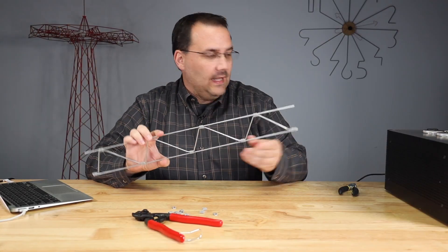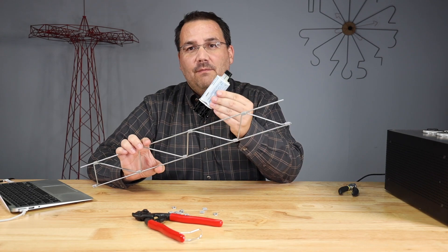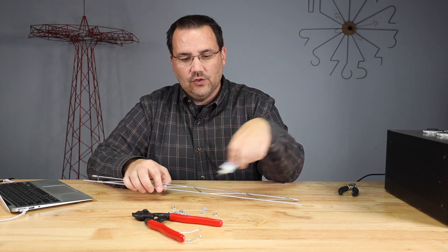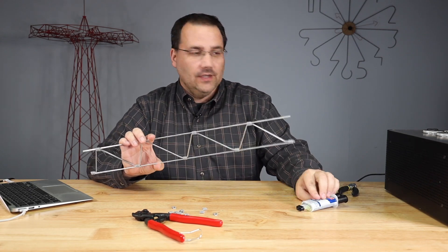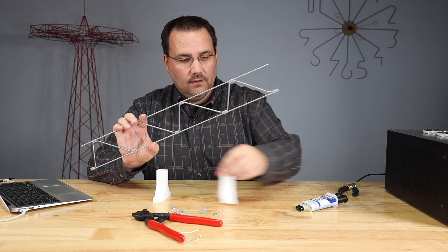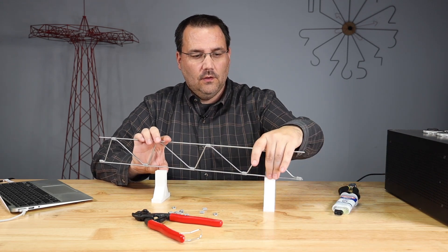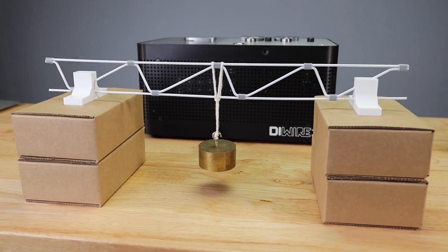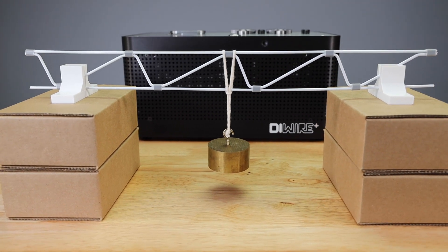And once you have all the clips in place, you can go ahead and add some five-minute epoxy to each one of the joints. This will make it surprisingly rigid. I also 3D printed some truss holders, and this allows me to do some testing for the truss and also some design changes.